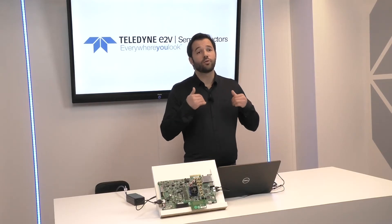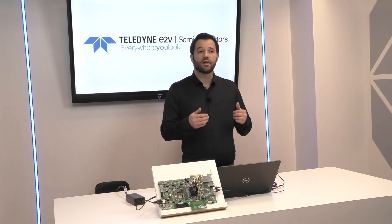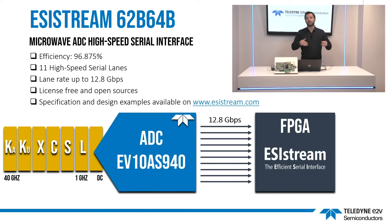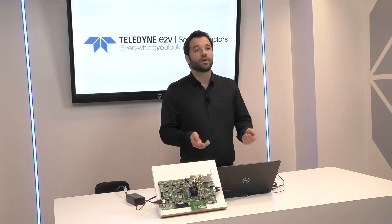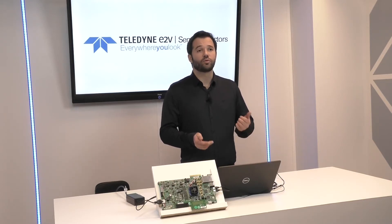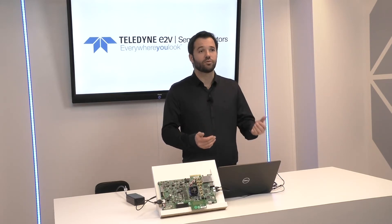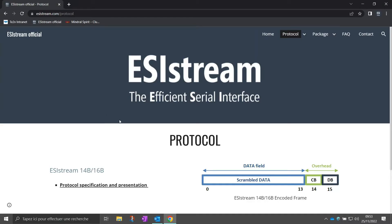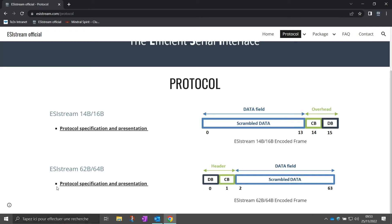Now that you know the great performances of this ADC, let's see how to use it. The ADC EV10AS940 is supported by the ESIstream 62B64B high-speed serial interface. This new ESIstream protocol improves sample transmission efficiency to reduce the number of serial lanes between the ADC and the FPGA. In real mode, 11 high-speed serial lanes with a lane rate up to 12.8 gigabit per second are necessary to transmit all samples to the FPGA. If you want to learn more on ESIstream 62B64B, the protocol specification is already available on the ESIstream website.